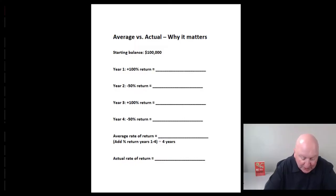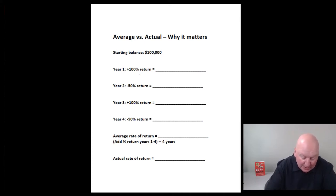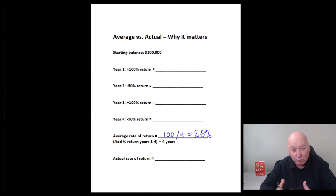Let's look at these four rates of return: a plus 100, a minus 50, a plus 100, and then a minus 50. If we get the average return on that, we just add it up and divide by four. 100 minus 50 plus 100 minus 50 equals 100. Divide that by four and we've got an average of a 25% return — pretty amazing return when you think of it.